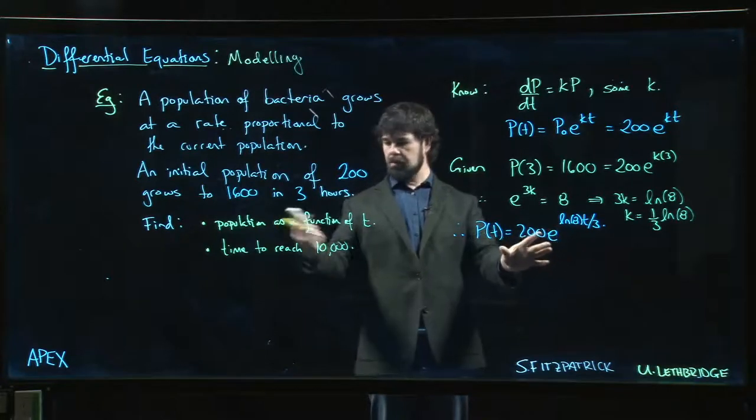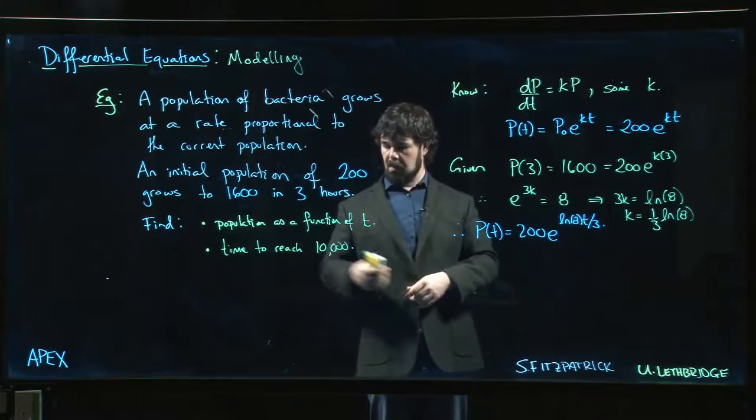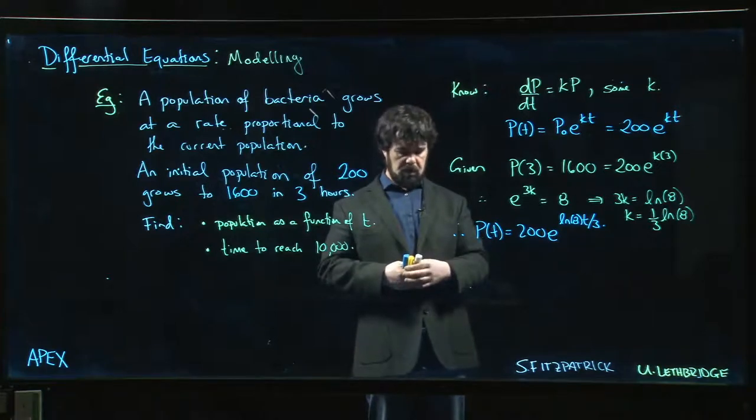That answer is the first part of the problem: population is a function of t. How about time to reach 10,000? Well, let's see.